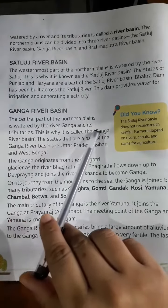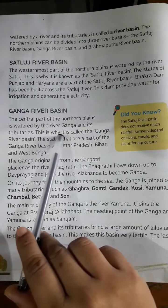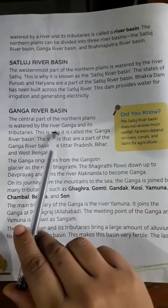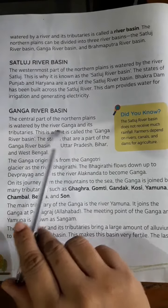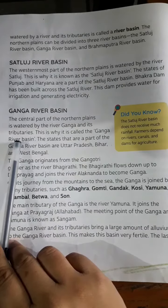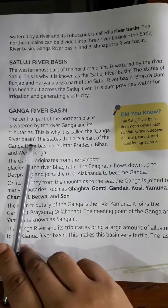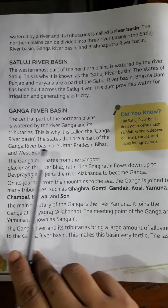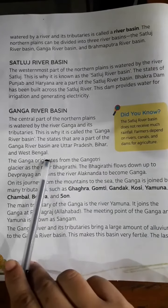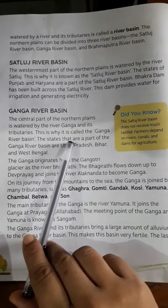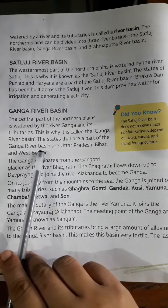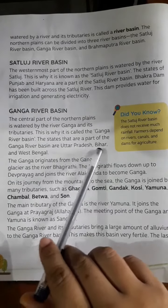The central part of the Northern Plains is watered by the river Ganga. The states that are part of the Ganga River Basin are Uttar Pradesh, Bihar, and West Bengal.